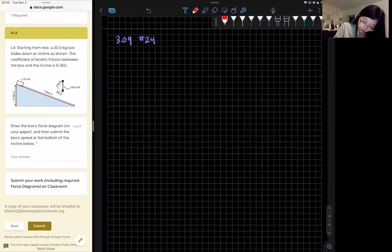This is 3.09 number 24. It's a level 4 problem. We have a 20 kilogram box sliding down an incline and the coefficient of friction is given.